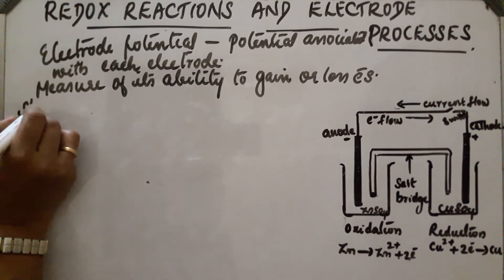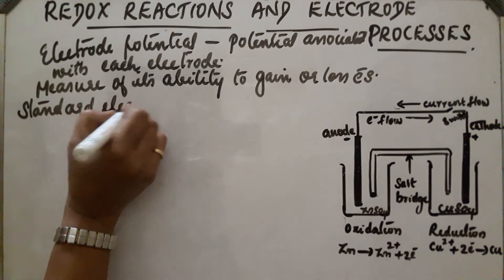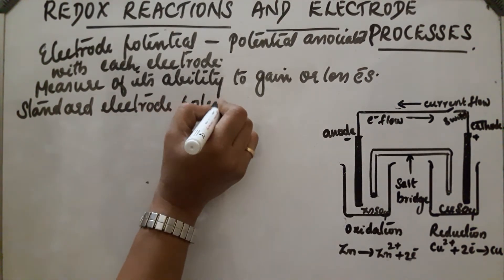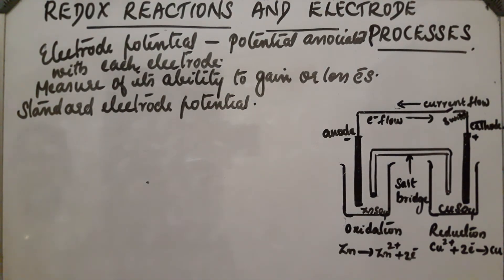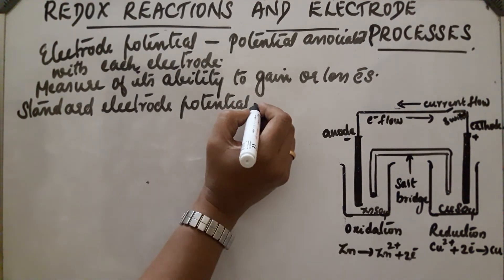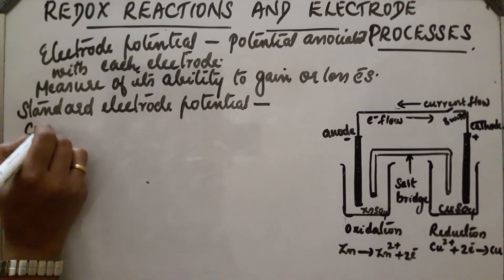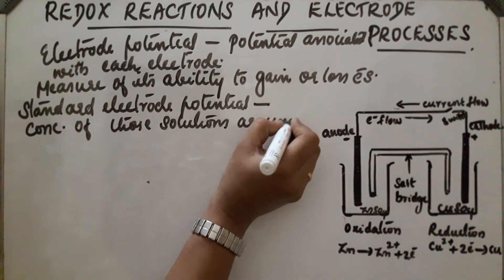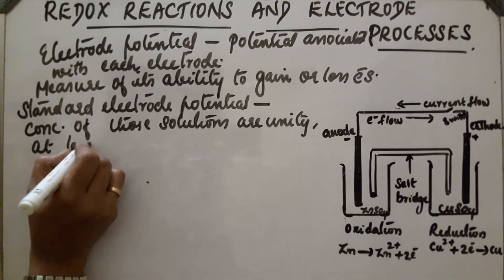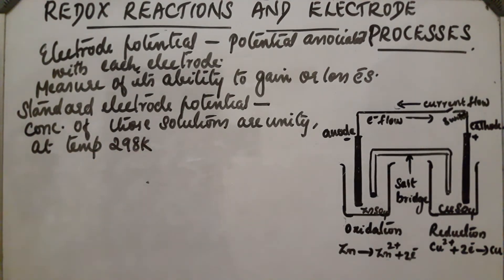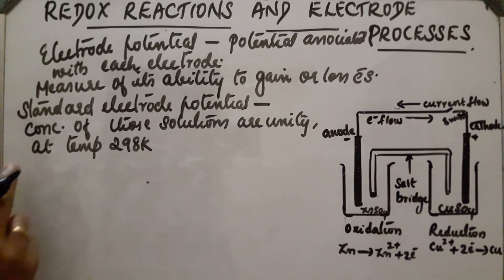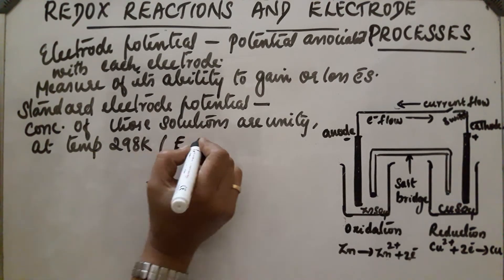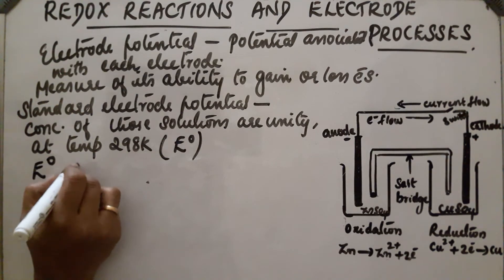Standard electrode potential: when the concentration of the solution of half cells is unity and the temperature is 298 Kelvin, the potential of each electrode is called its standard electrode potential. It is represented by E⁰.